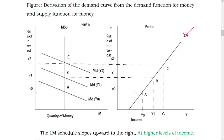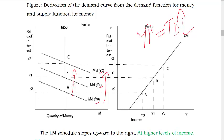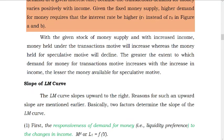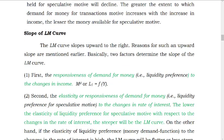We can derive the money demand function graphically. What is the answer? Income. Transaction demand — higher the income, higher will be the transaction demand for money. Higher the demand for money, higher will be the rate of interest. So income goes up, demand for money goes up, and the rate of interest goes up.